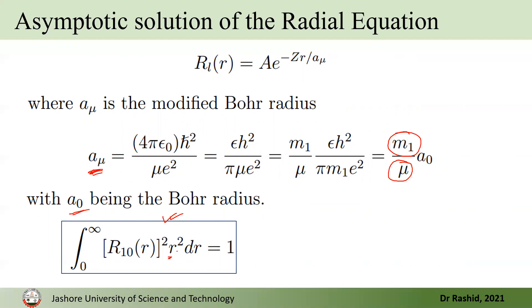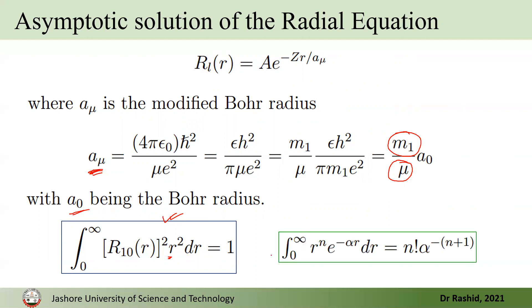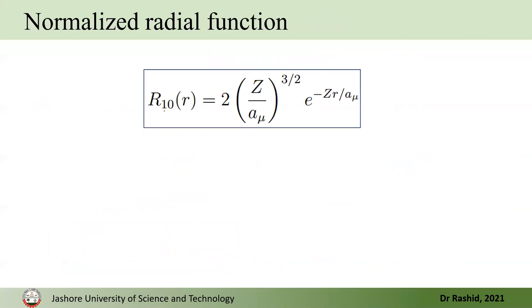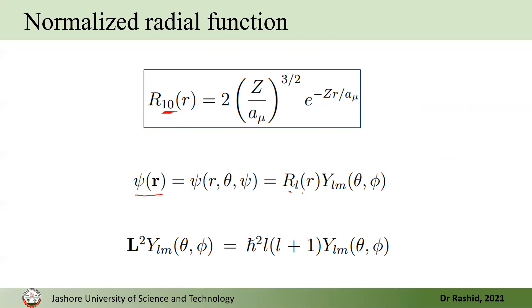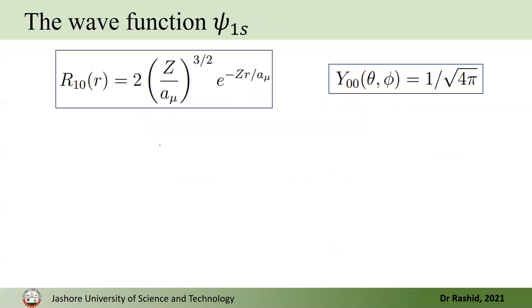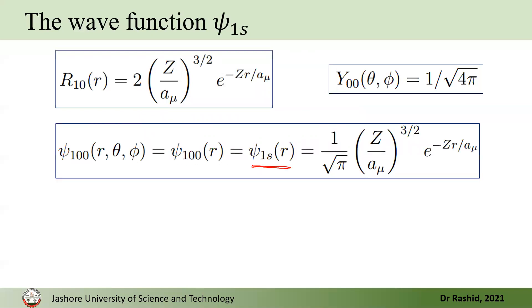To normalize this solution we integrate over r only — since the angle-dependent part is not included — and set the result equal to one. Using a standard integral, we obtain the result for R₁₀, where n=1 is the principal quantum number and l=0. Multiplying by the spherical harmonics Y_0^0, we get the total solution χ(r), which is the solution for the 1s orbital: n=1, l=0, and therefore m=0.